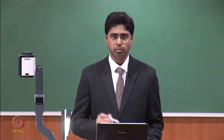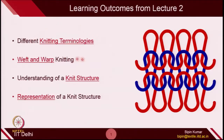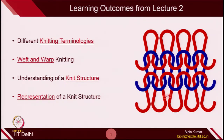At the end of Lecture 1, we tried to differentiate between plain woven fabric and basic knit fabrics, and found there are a lot of differences between these two structures, which is why they are used for different applications. Now in today's lecture, you are going to learn about different knitting technologies used to describe a knitted structure, two types of knitting — weft and warp — loop architecture, and how to represent a knit structure by a simple box diagram.